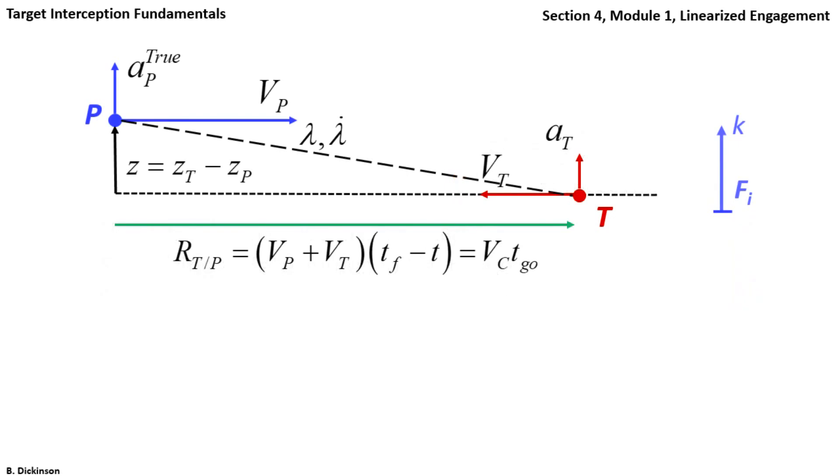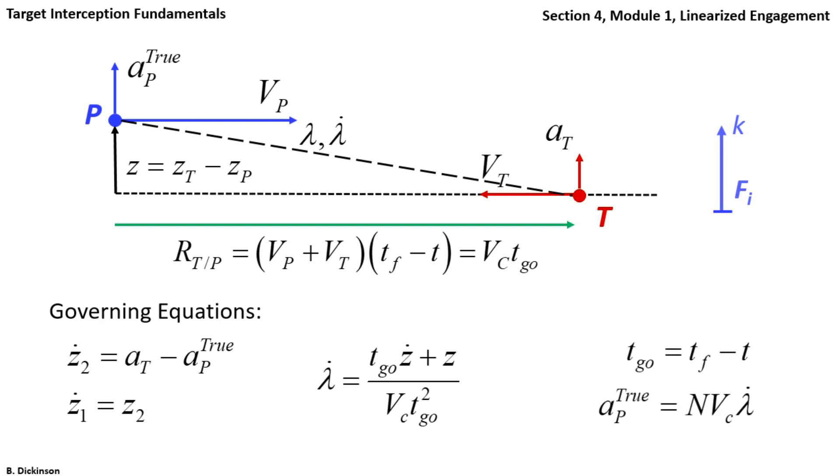To summarize the governing equations, relative acceleration and relative velocity broken out into Branowski canonical form. Line-of-sight rate. Time to go. And the true PRONAV. Note that there's not much difference between pure and true here. Essentially, the only thing that would change is VC would be swapped for VP. Both VP and VC are constant.